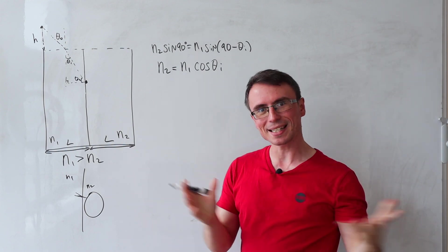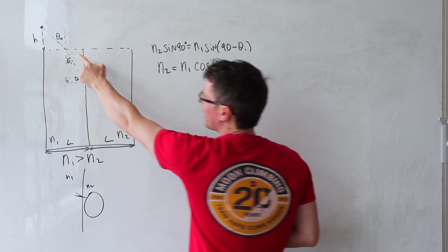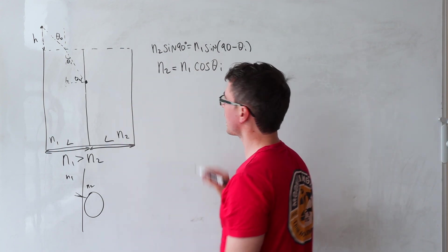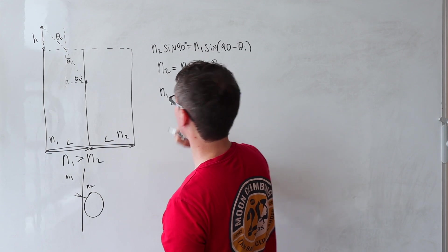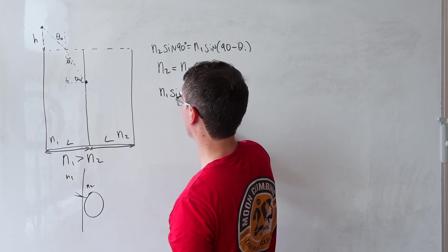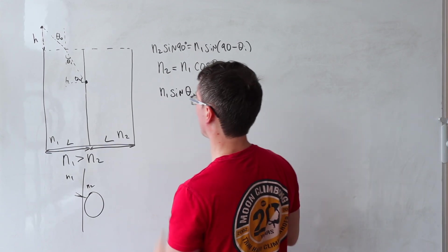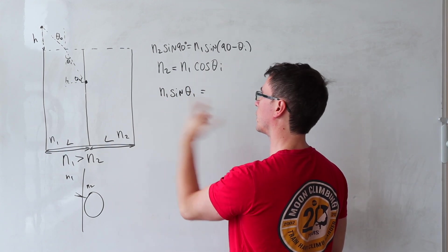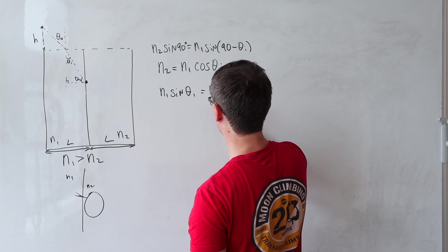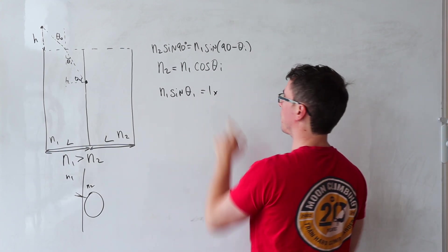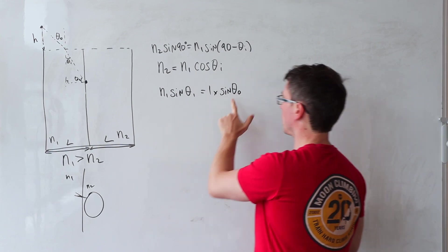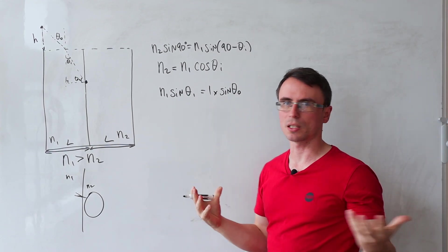We actually have two boundaries where the ray is going to go through. Interesting things happen at both boundaries. We can apply Snell's law here as well. We can say that N1 multiplied by sine theta i is going to be equal to the refractive index of air, which is one, multiplied by the sine of the angle of refraction, which is just going to be theta o.